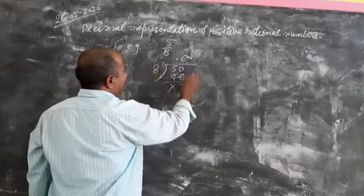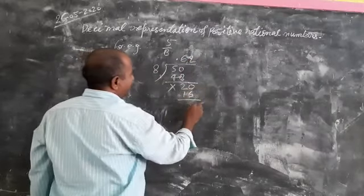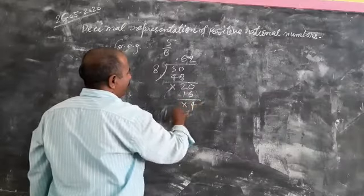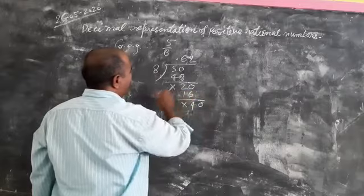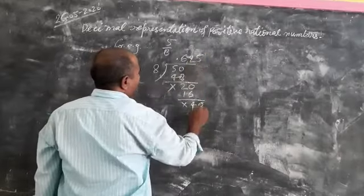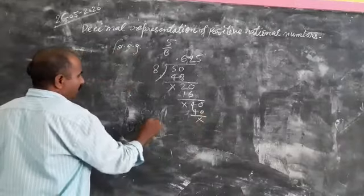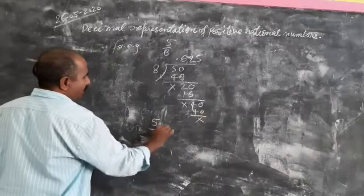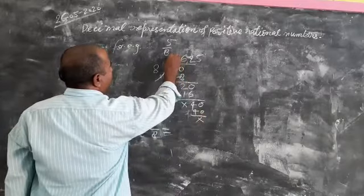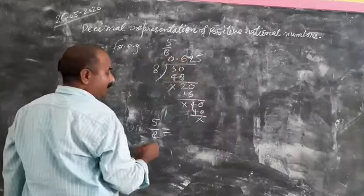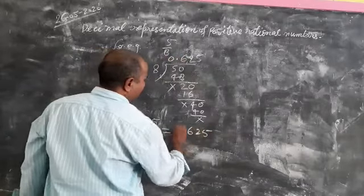Divide it by 8. 8 times 2 is 16. So 10 minus 6 is equal to 4, and 1 minus 1 is equal to 0. Now increase one more 0. 8 times 5 is equal to 40. In this way, you can see that 5 by 8 is quotient. And if there is no any digit before decimal, you can increase 0. So it will be 0.625.